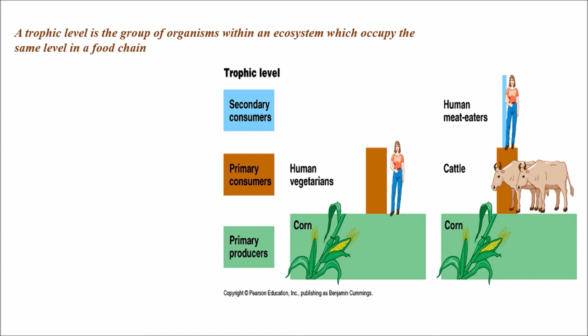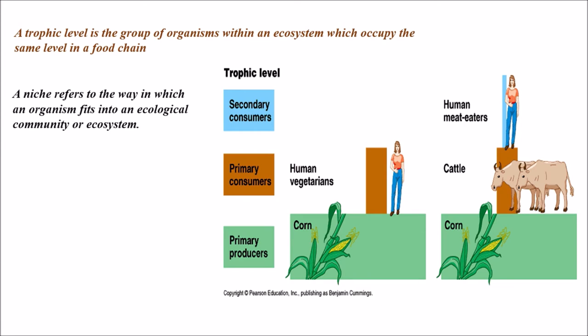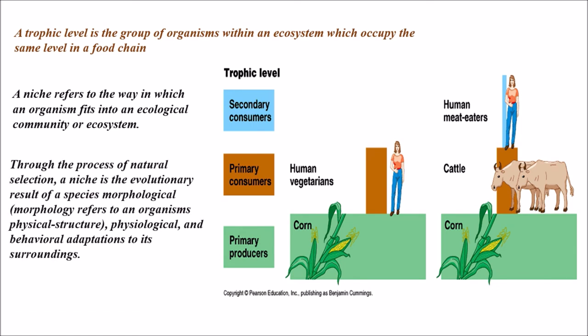Coming to niche — what is a niche? A niche refers to the way in which an organism fits into an ecological community or ecosystem. In an ecosystem we call different trophic levels for different animals, but when we talk about a particular organism, such as humans, cattle, or producers, we use the term niche. It defines the ecological community of an organism and the way it fits in, including its feeding habits and micro-environment.